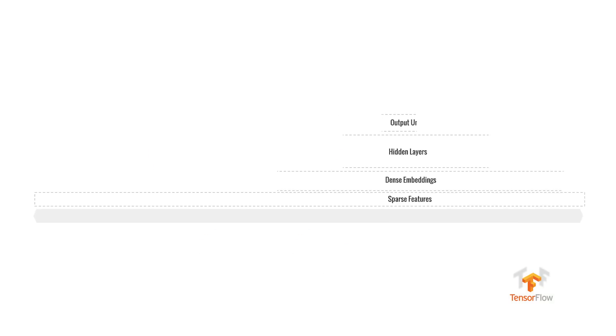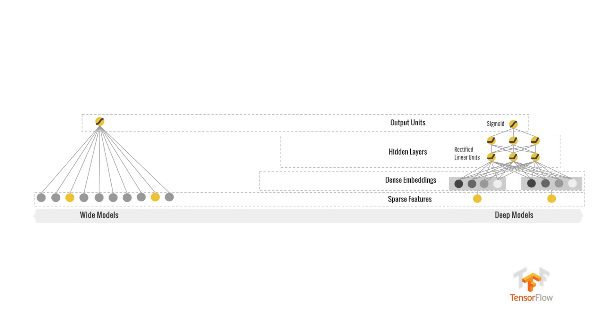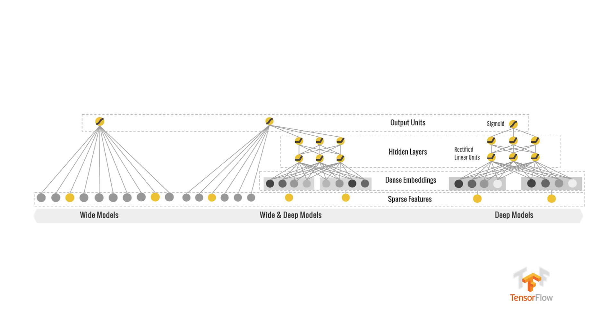Wide and Deep Learning combines the power of memorization and generalization, and it does that by jointly training wide linear models and deep neural networks. We're sharing a research paper about it and also the implementation with an easy-to-use API in TensorFlow, which is an open-source library for machine intelligence. Wide and Deep Learning is useful for generic large-scale regression and classification problems with sparse inputs, things like recommendation systems, search, and ranking problems.